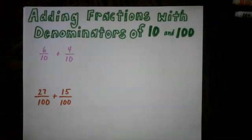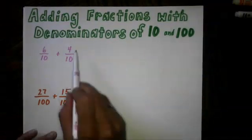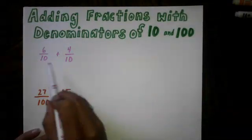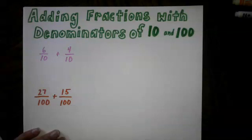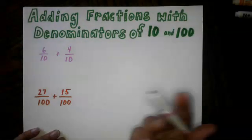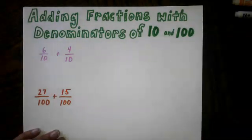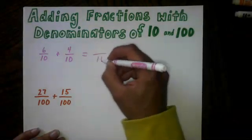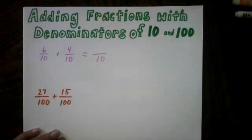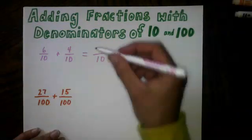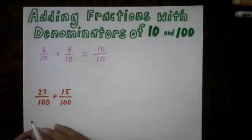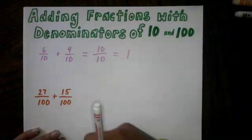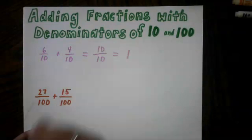So we'll start with the real basics here. We have two fractions here, 6 tenths plus 4 tenths. You'll notice they have the same denominator, common denominators, which means this is super duper easy. We can just add them as is. When we're adding fractions, we keep the denominator the same as long as we have common denominators, and we add the numerator. 6 plus 4 is 10. We end up with 10 tenths, which we know is one whole. Super duper easy if you have common denominators.